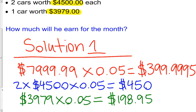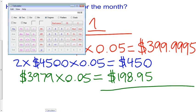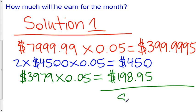So all we need to do now is we need to total all these commissions up. So what do we get? Final answer, $399.9995 plus $450 plus $198.95 is $1,048.9495. And now what I can do is I can round them, and rounding with respect to money, we always round to the nearest hundredth. So we're going to round that to 0.95. So that's $1,048.95. $1,048.95.